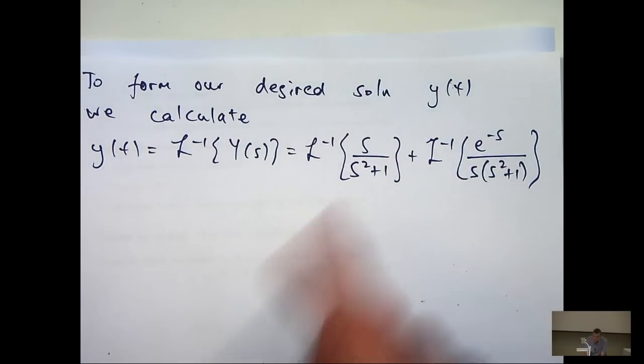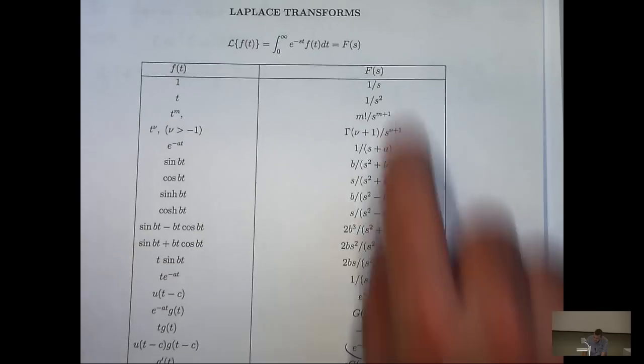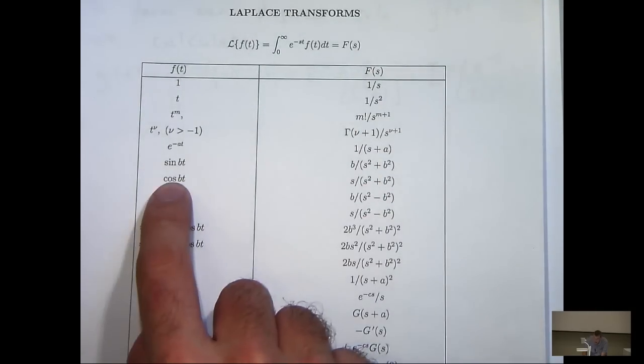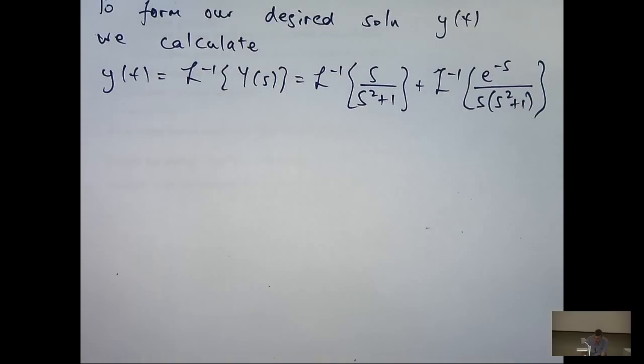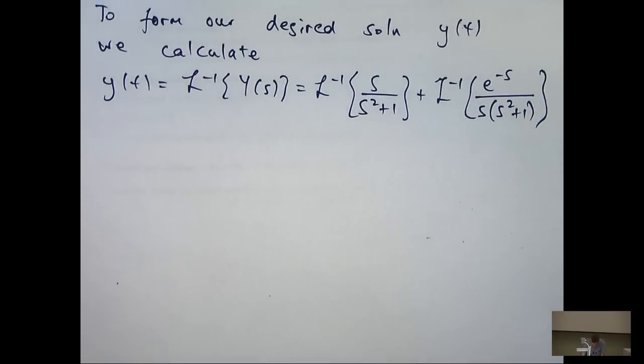Now the first one is easy, we can look that up on a table of transforms. So if we look this up, I'll see that the inverse transform is cos in our case, but this one is not so easy to calculate.